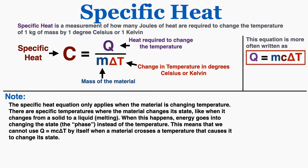A quick note: the specific heat equation only applies when the material is changing temperature. There are specific temperatures where a material changes its state — like when it goes from a solid to a liquid during melting. When this happens, energy goes into changing the phase rather than the temperature, so we cannot use Q = MCΔt alone when a material crosses a phase-change temperature. That will be the theme of the next few videos; for now, remember you can only use this equation when the material is changing its temperature, not its state.